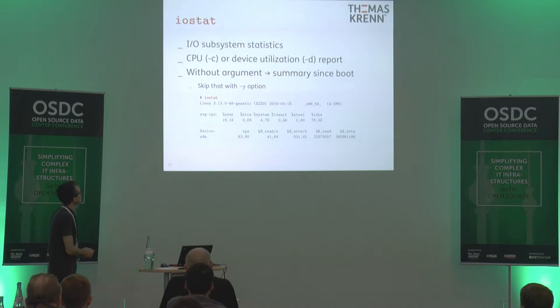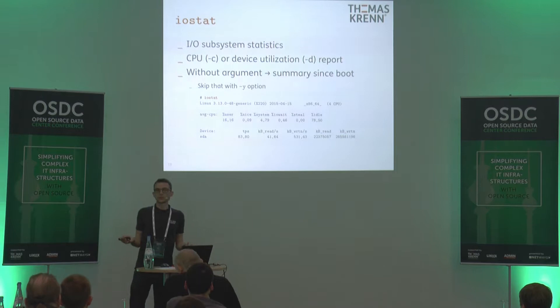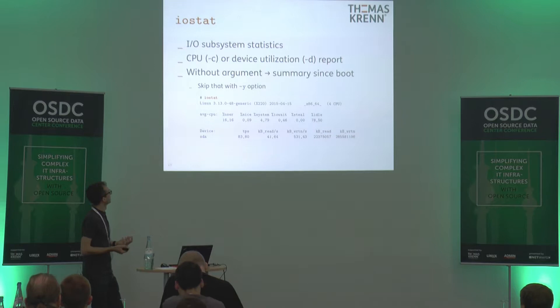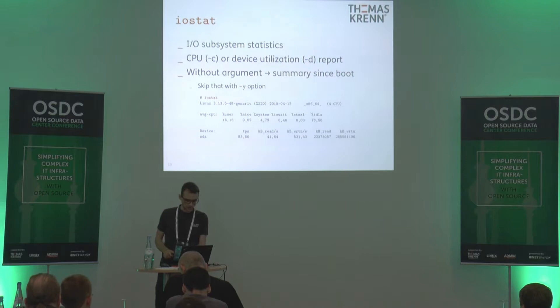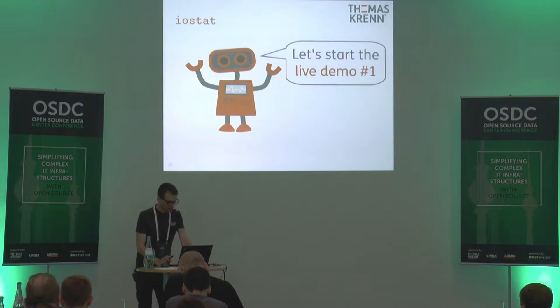Next tool: IOSTAT. This shows IO subsystem statistics. It has multiple reports, for example a CPU report or the device utilization report. When you execute it without any arguments, it shows you the average numbers since the last reboot. You can skip that with the -Y option if you want to get currently live data.